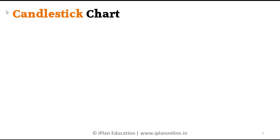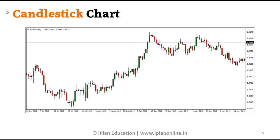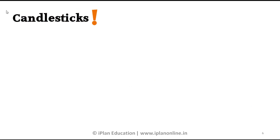Another type of chart after the line chart is the candlestick chart, which was developed by the Japanese and is a highly popular chart type. In these charts, price moves are represented by candlesticks. We can see here two figures — one in red and another in green — representing two different candles. The red one is a bearish candle and the green one is a bullish candle.